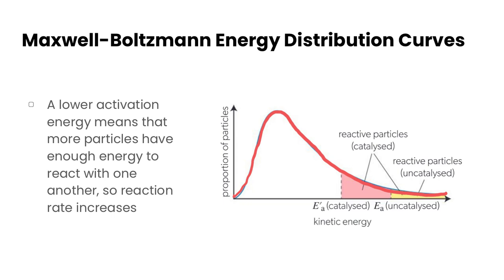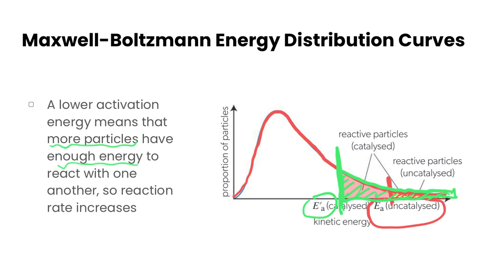What changes is the activation energy itself. For an uncatalyzed reaction it's much higher, so the number of particles under the curve that exceed it is quite small. Comparing that to the catalyzed reaction, which has a lower activation energy, many more particles now have sufficient energy for reaction to occur. A lower activation energy means more particles have enough energy to react, so the reaction rate increases. That's how we relate temperature and catalysts as factors affecting reaction rate in terms of Maxwell-Boltzmann energy distribution curves.